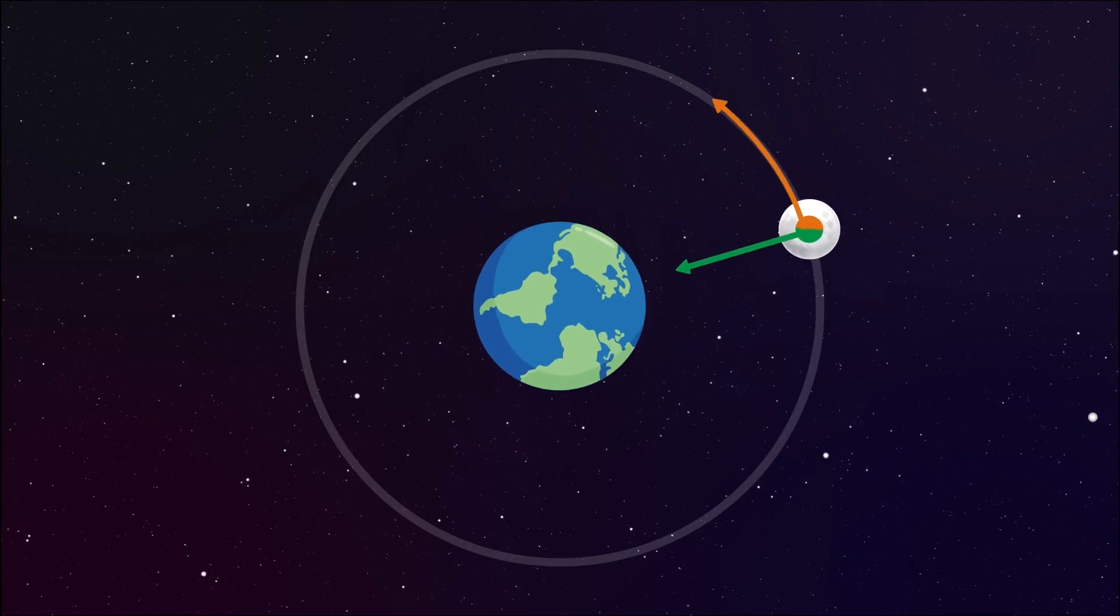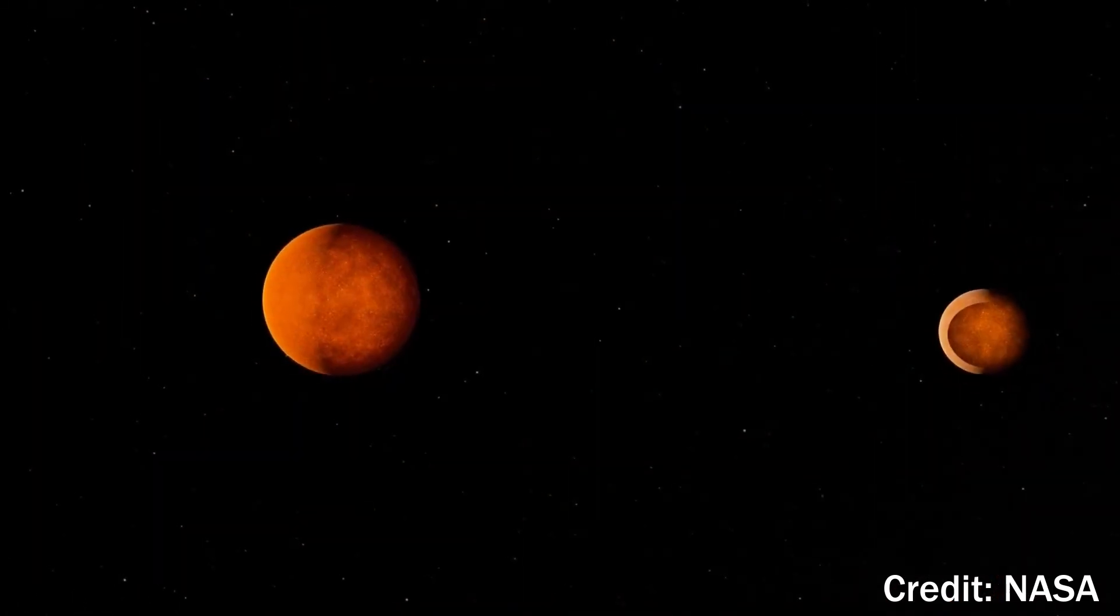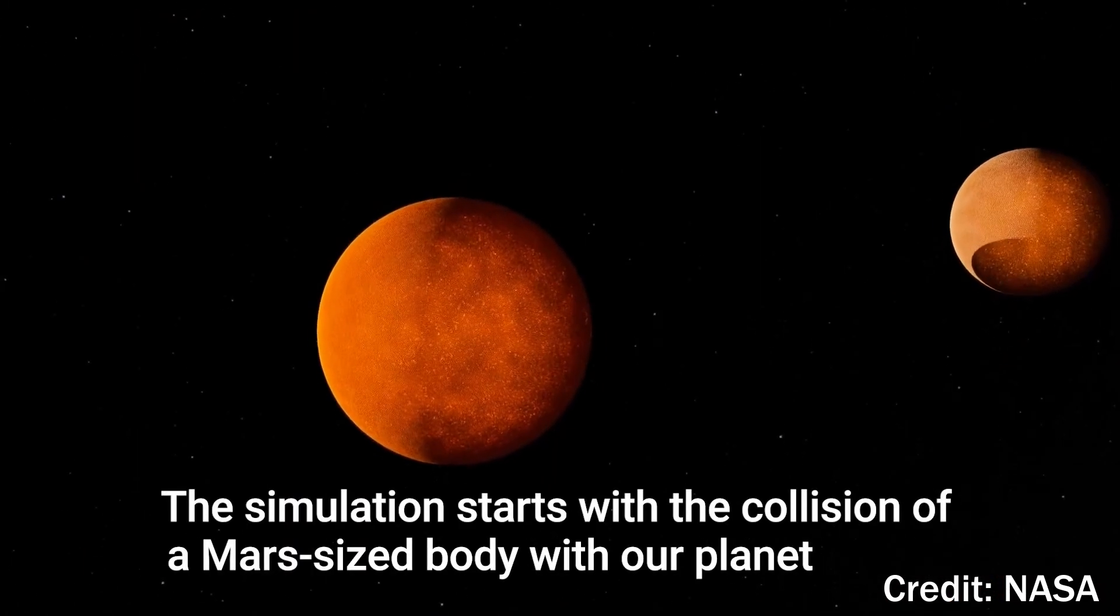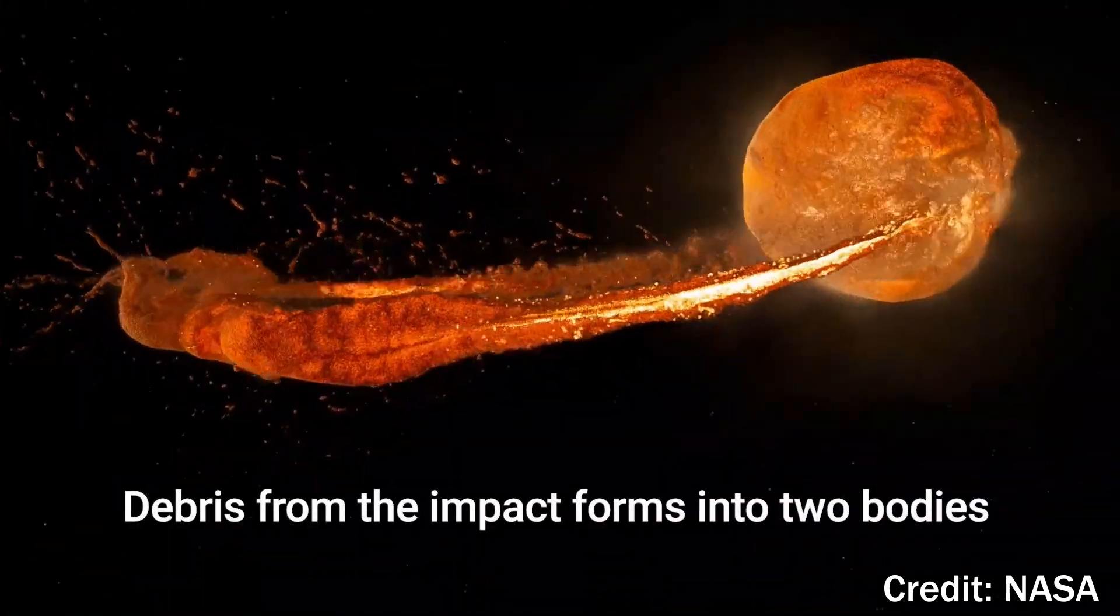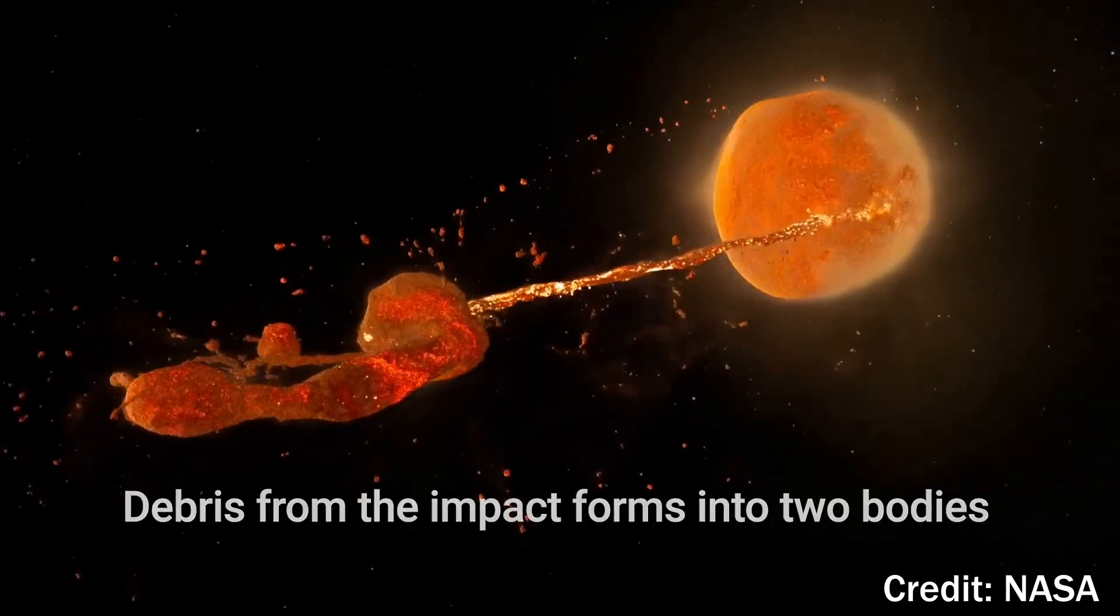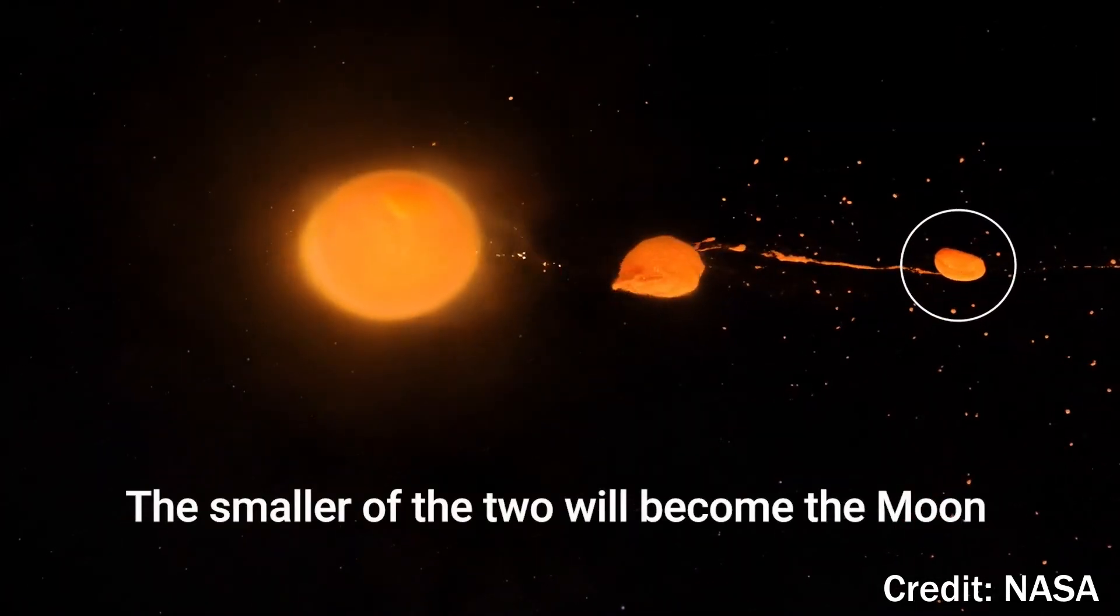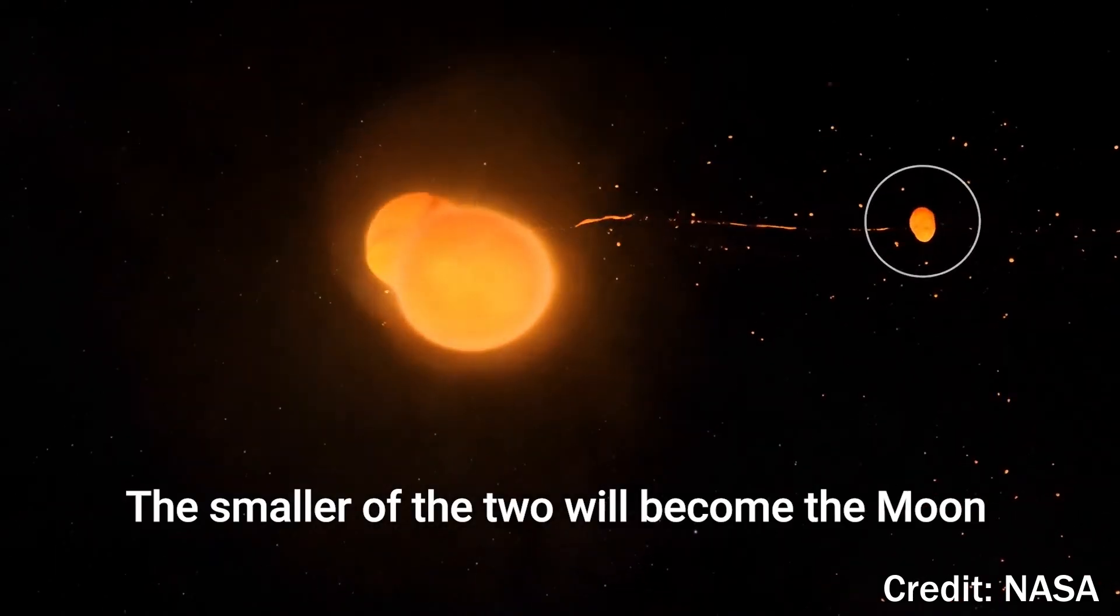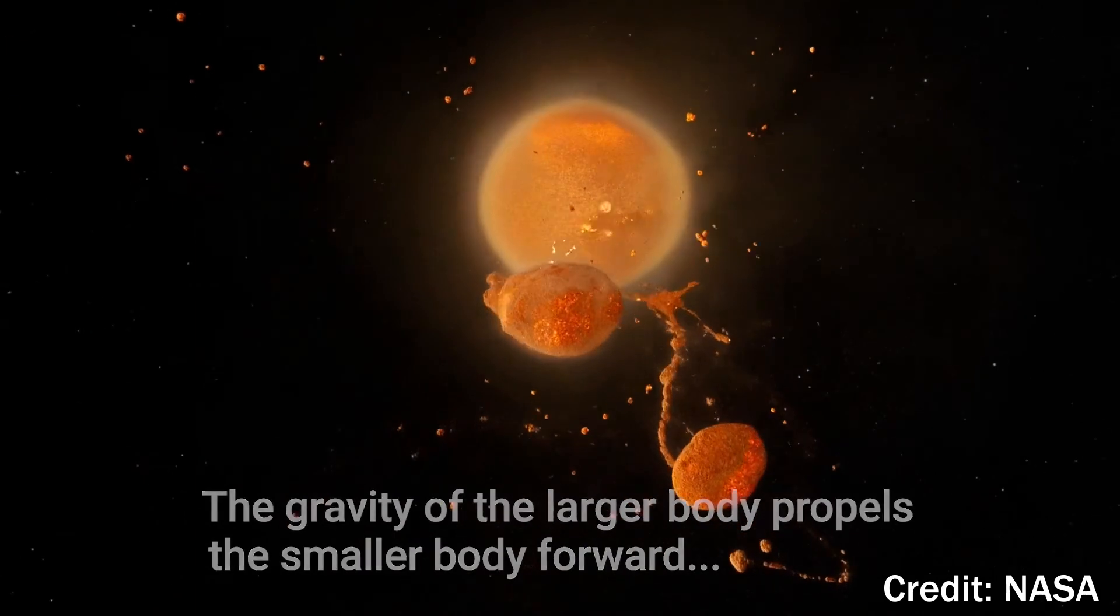Now you might be wondering what causes the moon to have that enormous speed in the first place. There are several hypotheses for that. As the moon formed, the material that eventually coalesced into the moon spun around the earth. This spinning motion created an angular momentum which has to be conserved, which meant that the moon had to be set in motion around the earth. This resulted in its initial speed.